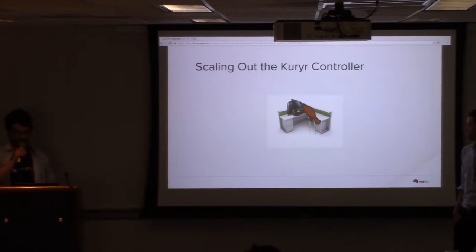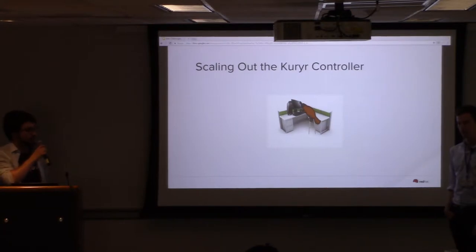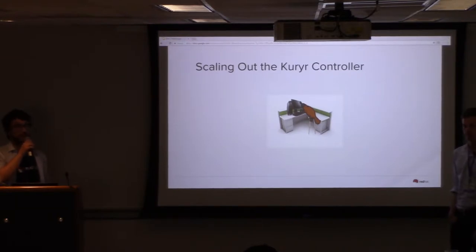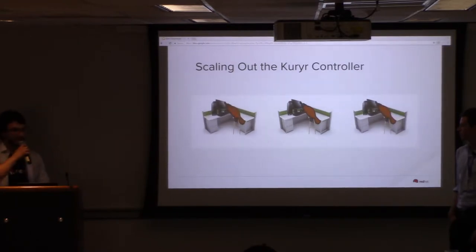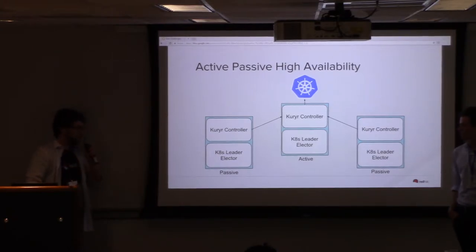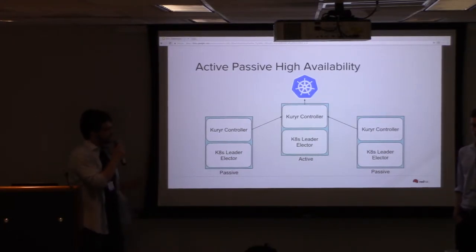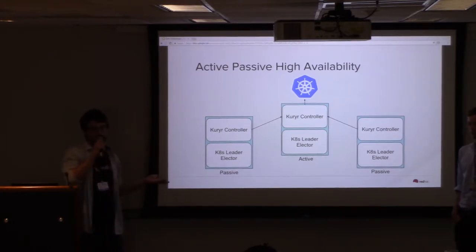My project specifically this summer had to do with scaling out the Kuryr controller. The Kuryr controller is a component responsible for listening for Kubernetes API events in OpenShift and translating those into the appropriate OpenStack API calls to service different networking events — resources that needed to be created, modified, or destroyed. Right now we have a high availability mode in active-passive mode, meaning one node is active and a series of nodes are passive, waiting for the active node to fail.